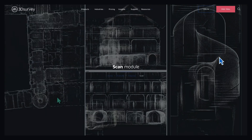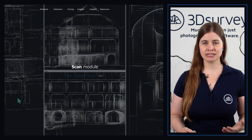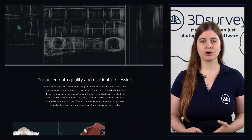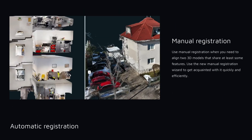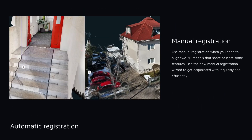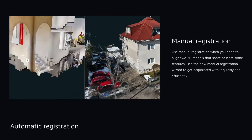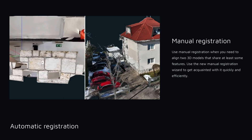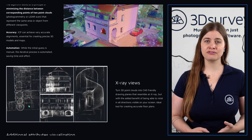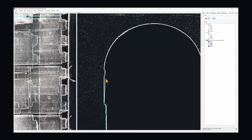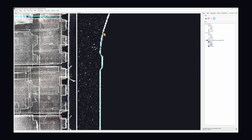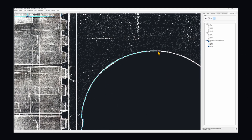3DSurvey's scan module is designed for users looking to integrate their LIDAR or scan data and create compelling 3D models based on multiple data sources. The scan module offers features such as manual and automatic matching, where you can easily align your scan data. X-ray views is another key feature of this module, ideal for users who need to create floor plans. For this feature, you can directly create your CAD lines, saving you from having to switch between software to achieve your deliverables.